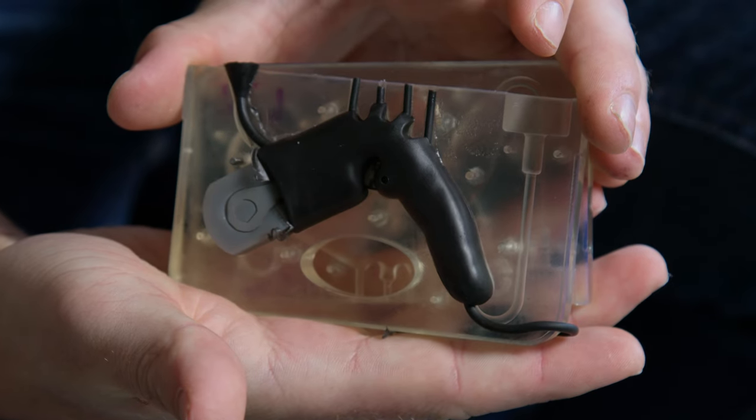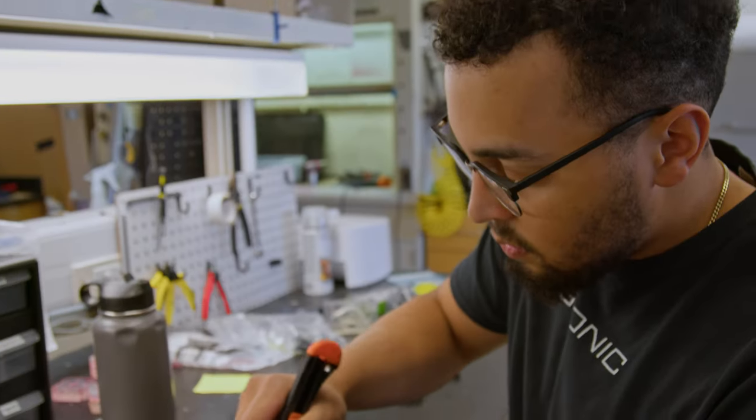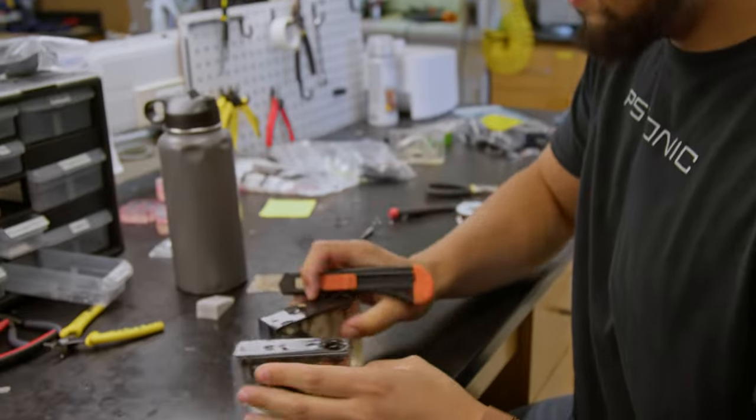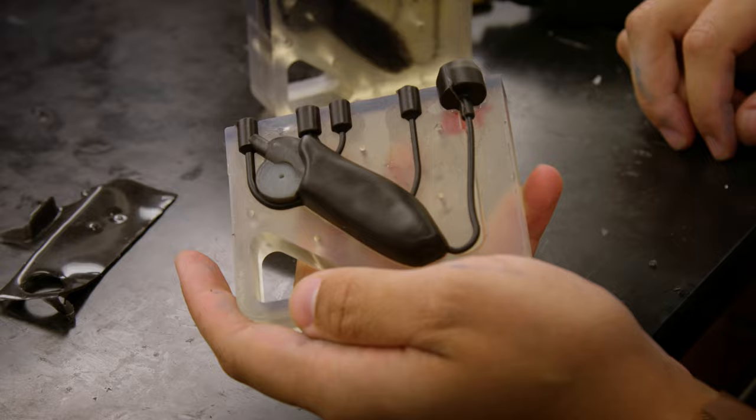We use clear resin to mold at least one silicone part, primarily the silicone fingers and silicone thumb. The surface finish needs to be as smooth as possible and we found that we get the smoothest surface finish from running it at the 25 micron resolution size.